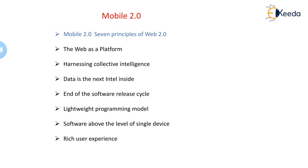Mobile 2.0 has 7 principles derived from Web 2.0. These principles are: portability, miniaturization, connectivity, convergence, divergence, and apps.